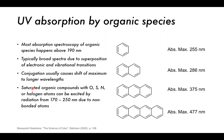We can also add heteroatoms to a system to make it more conjugated or to link conjugated systems. Saturated organic compounds with oxygen, sulfur, nitrogen, or halogen atoms can be excited by radiation from 170 to 250 nanometers due to non-bonded electrons — the lone pairs on oxygen, sulfur, and nitrogen.